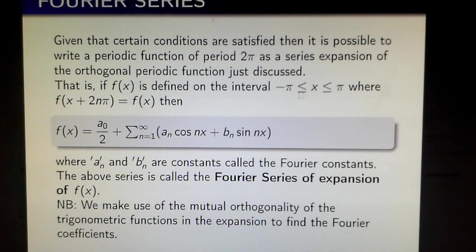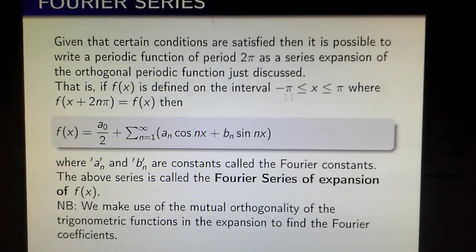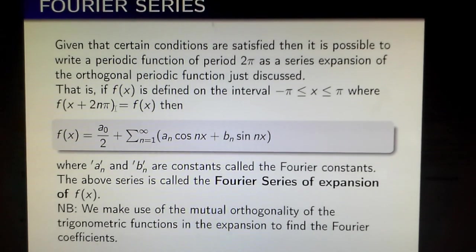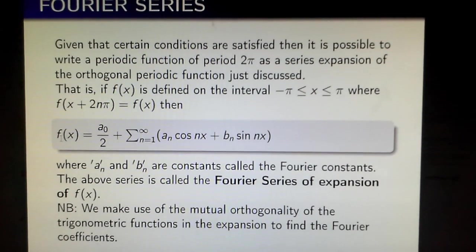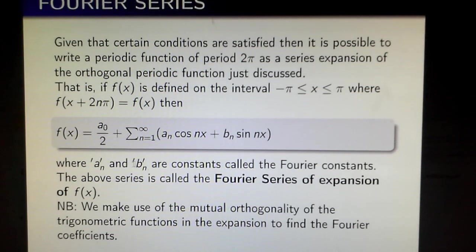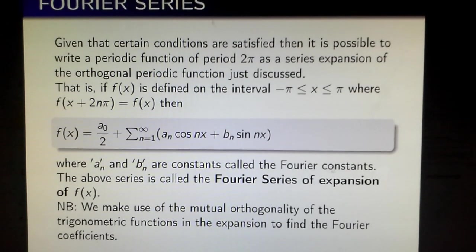on the interval -π ≤ x ≤ π where f(x + 2nπ) = f(x). This function gives us the expansion where a_n and b_n are constants called the Fourier constants.